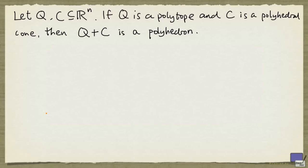Let Q be a polytope in R^n, and let C be a polyhedral cone in R^n. Then the set Q plus C is a polyhedron.